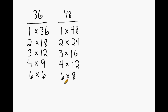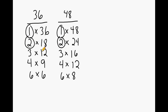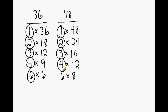Now we are going to circle all common factors of 36 and 48. 1 is a common factor. 2 is a common factor. 3 is common to 36 and 48. 4 is another common factor. 6 is another common factor. And the largest common factor, or the greatest common factor, is 12.